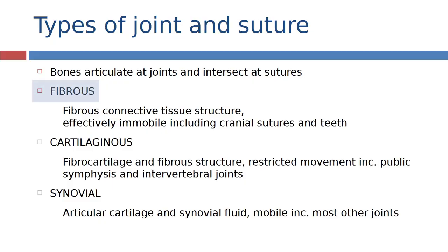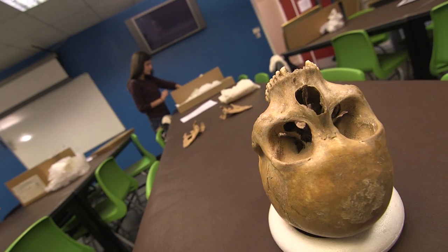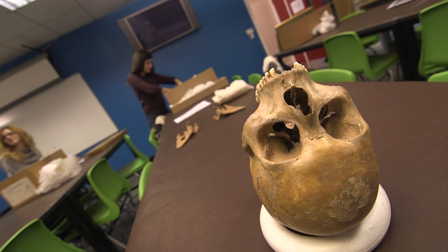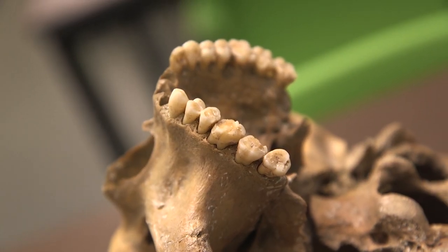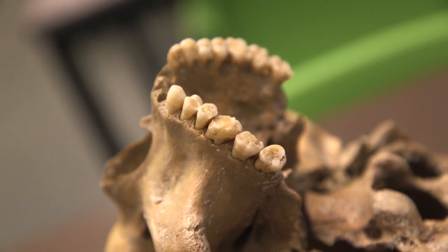Fibrous joints are composed of fibrous connective tissue surrounding the bone and they're effectively immobile. People don't necessarily assume that an immobile bone structure would count as a joint, but some joints are immobile. The cranial sutures, the areas where the bones of the cranial vault of the skull join together are fibrous joints as actually are the joints between your teeth and your jaw. They're joints but they're immobile.